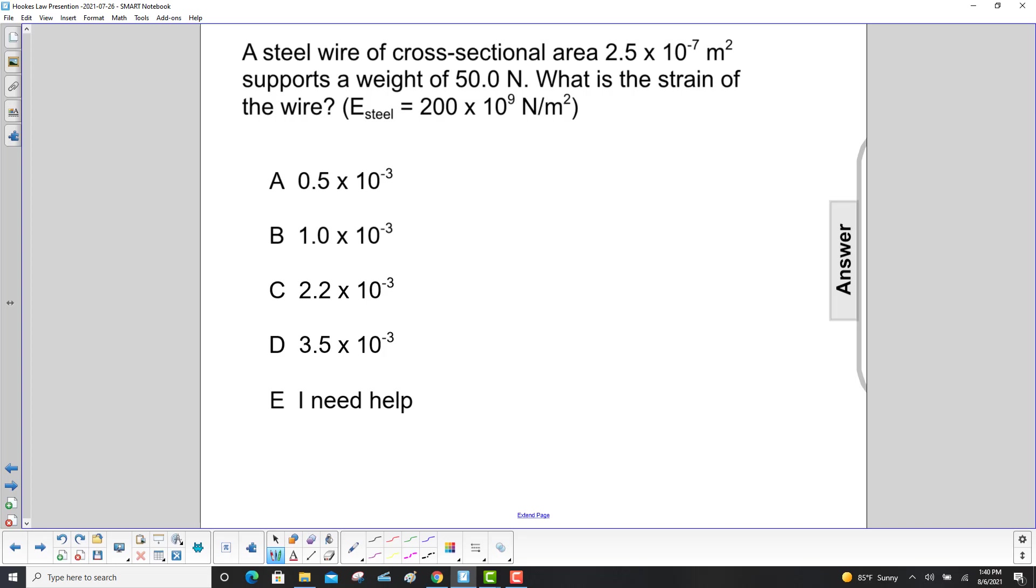A steel wire of cross-sectional area 2.5 times 10 to the minus 7th square meters supports a weight of 50 newtons. What is the strain in the wire?